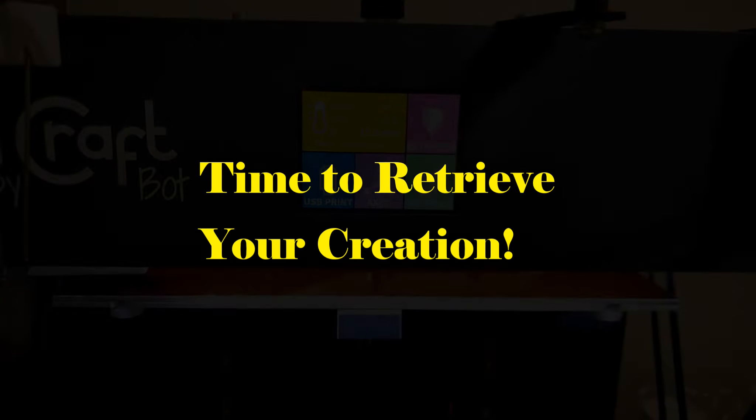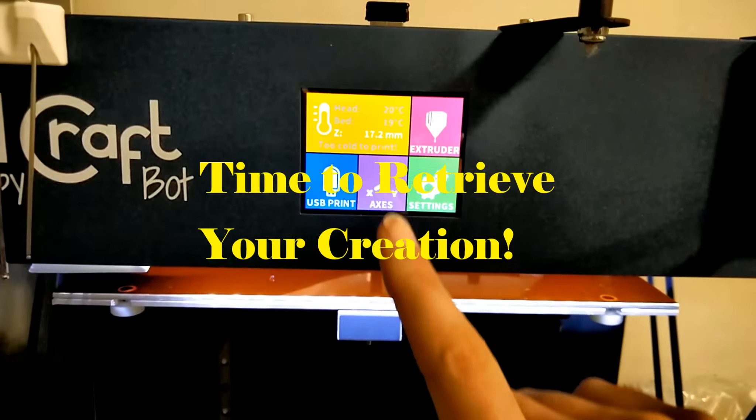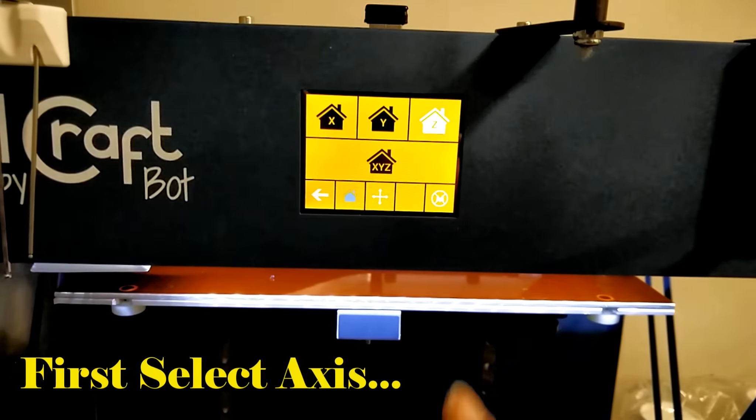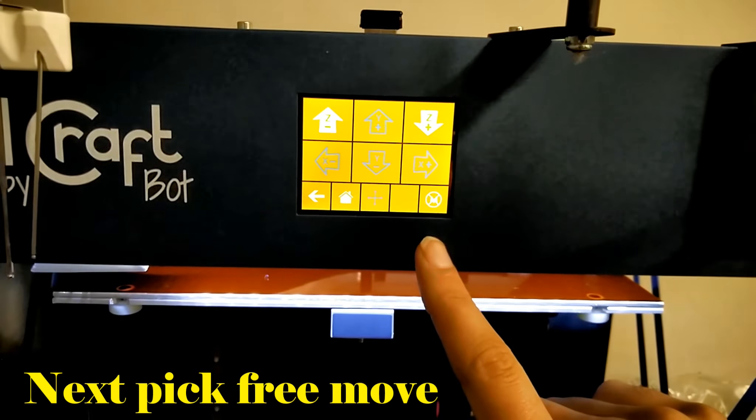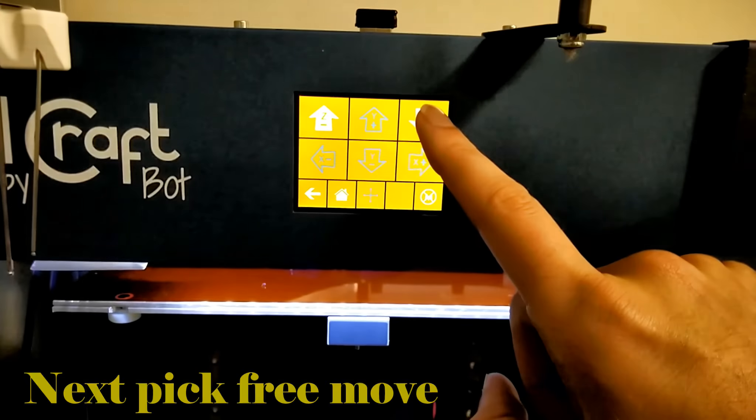Now it's time to remove your creation. From the main menu select Axes and then select the 4 points arrow and then select Z plus. This will lower the bed.